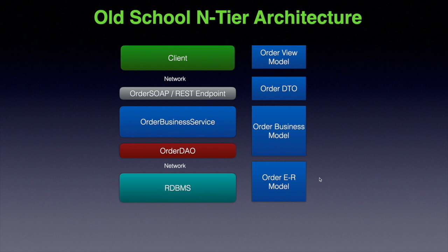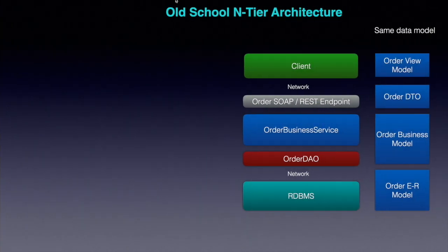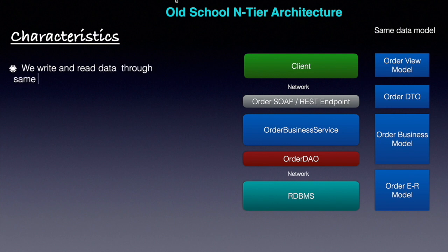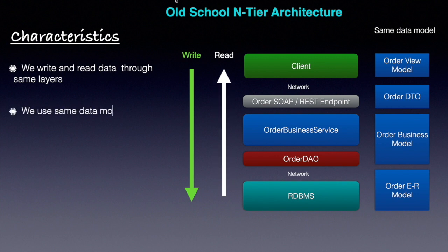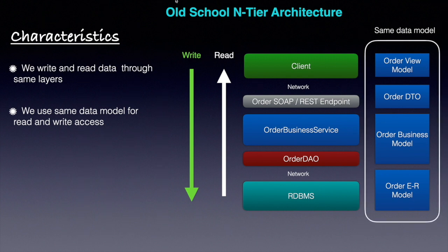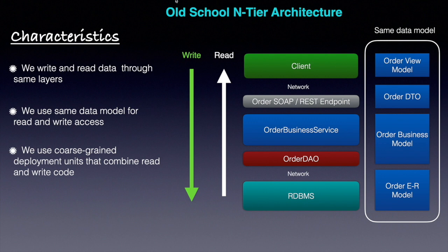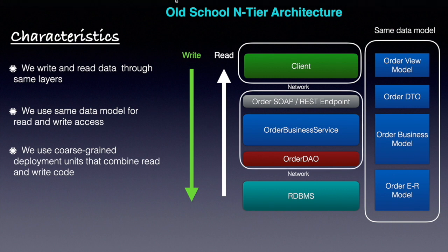This architecture is very normal and makes sense to build any enterprise-level application. If you look at the characteristics of N-tier architecture, we use the same stack of layers for write and read operations, and also the same data model for business logic processing, reading and writing data. We also use coarse-grained deployment units that combine read and write code together, deploying as a single unit such as a JAR, WAR, or EAR file on heavyweight application servers like WebLogic and WebSphere.